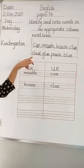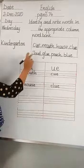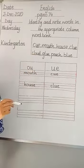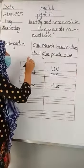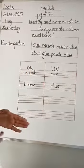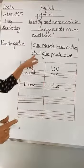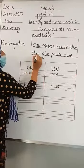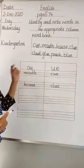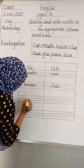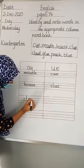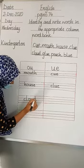Now come to the next word. The next word is C-L-O-U-D, 'cloud'. Can you tell me — does the word 'cloud' have 'ow' sound or U sound? Yes, very good. The word 'cloud' has 'ow' sound. So we have to write the word 'cloud' in the 'ow' sound column. C-L-O-U-D.